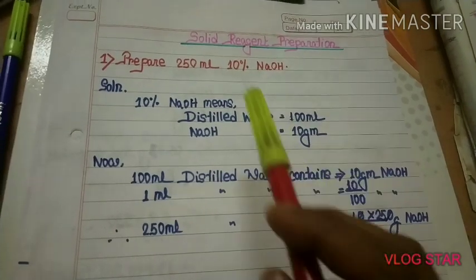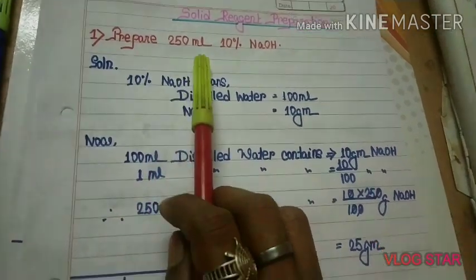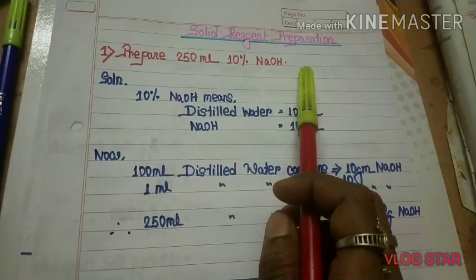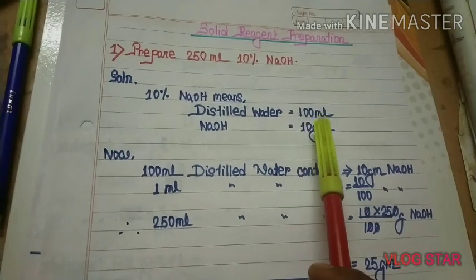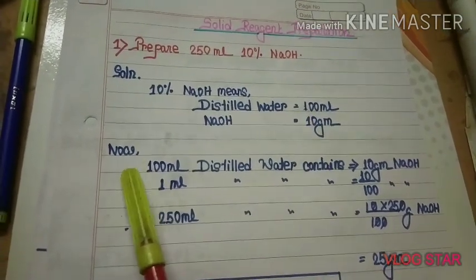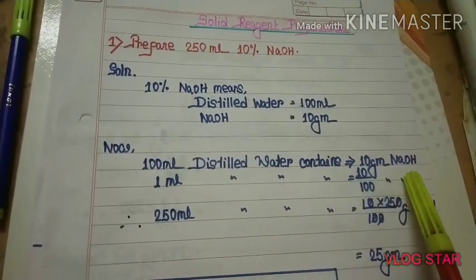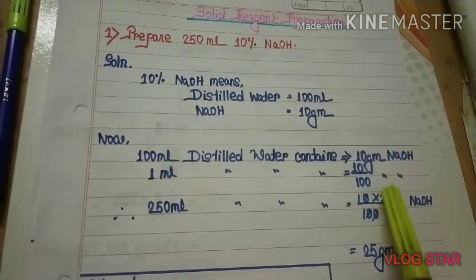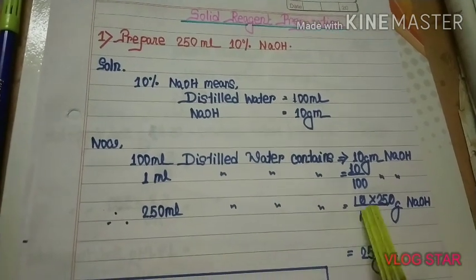Now we are talking about solid reagent preparation. Prepare 250 ml of 10% NaOH. 10% NaOH means 100 ml distilled water contains 10 grams of NaOH. Therefore, 1 ml distilled water contains 10/100 grams of NaOH.